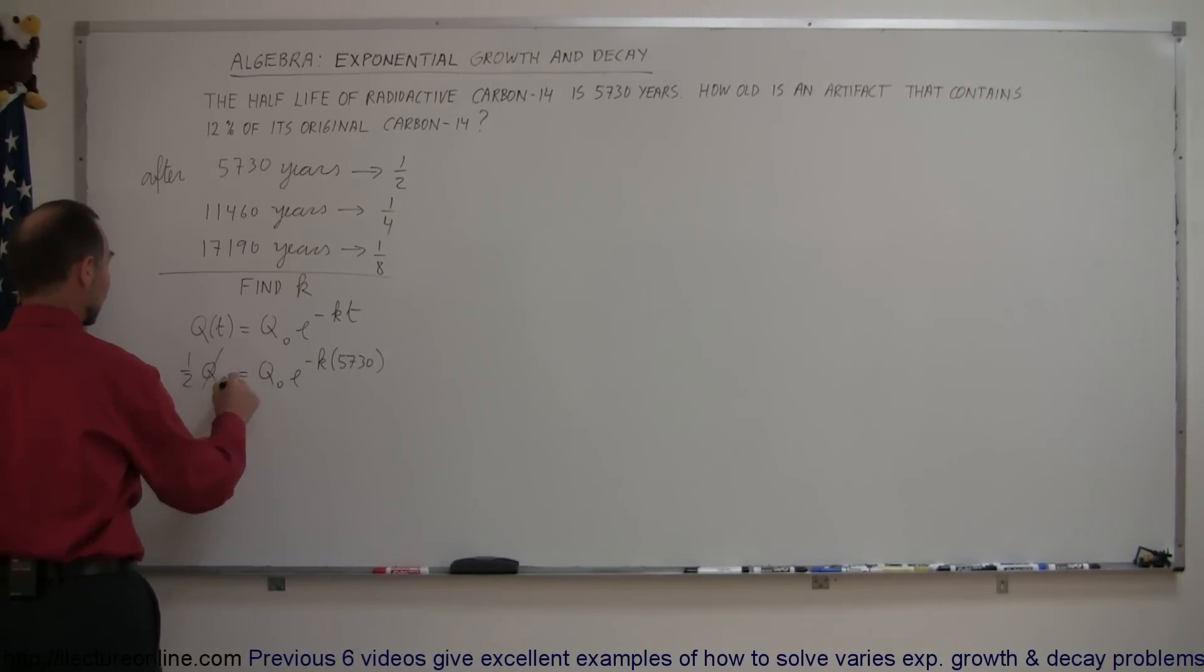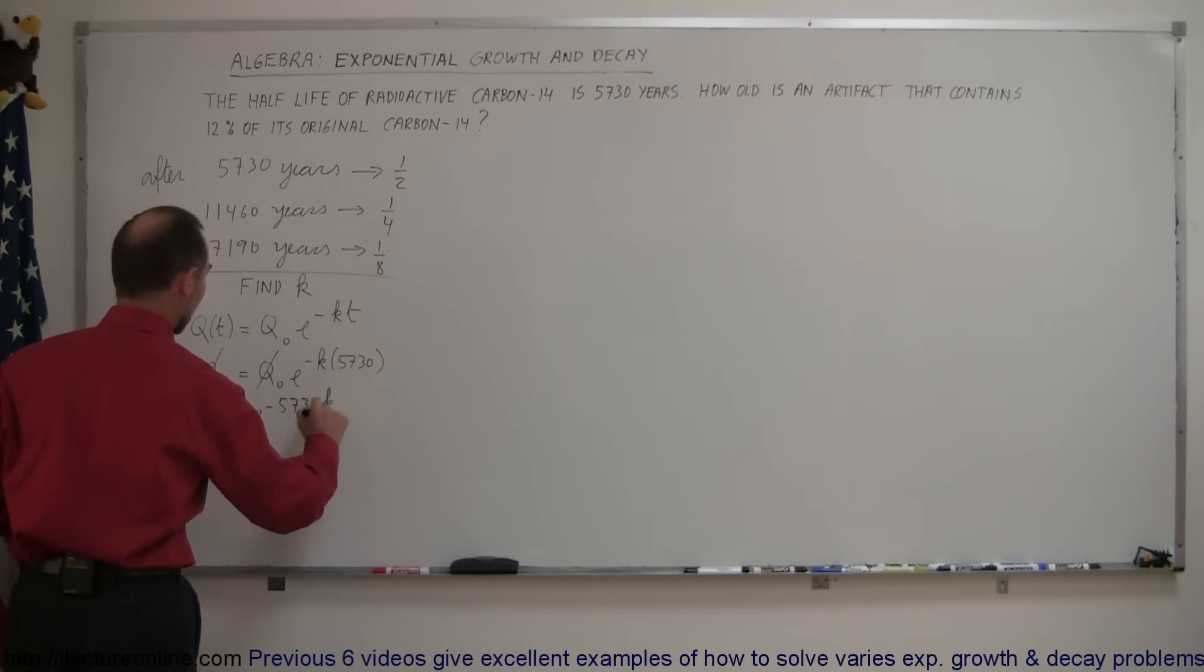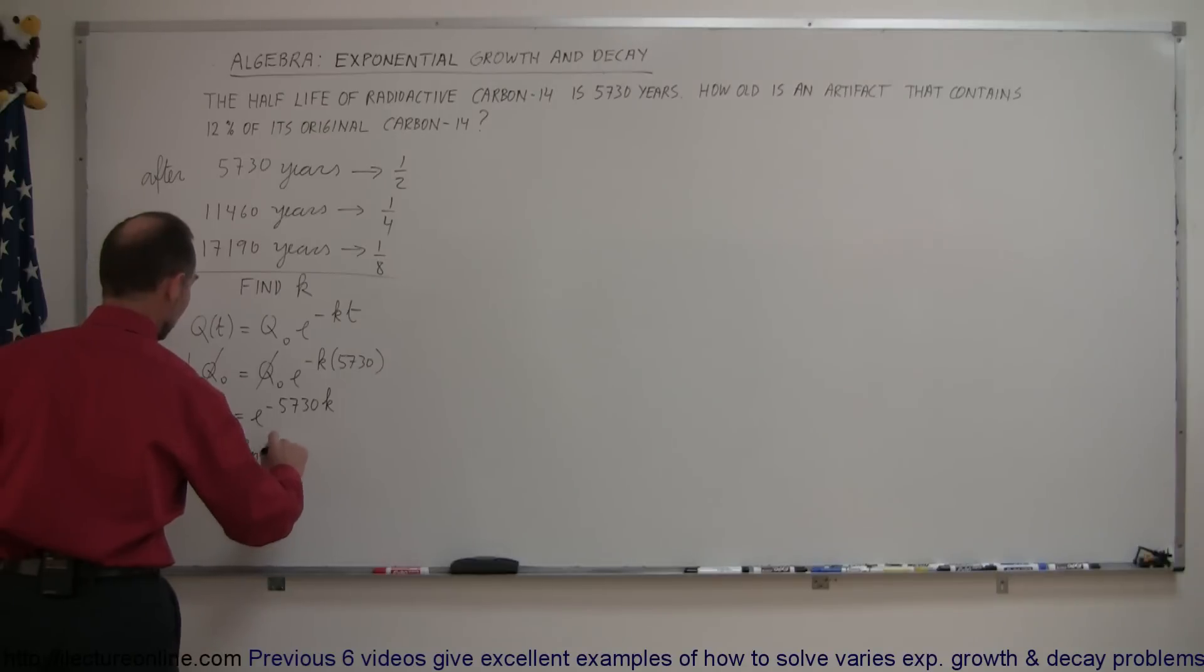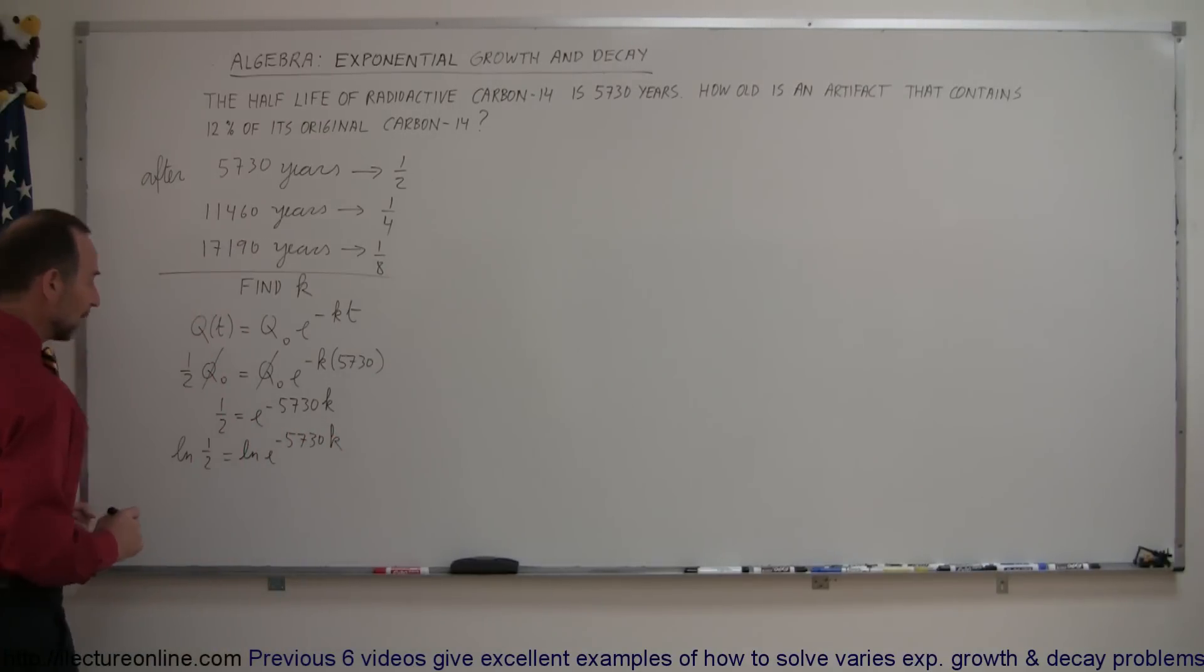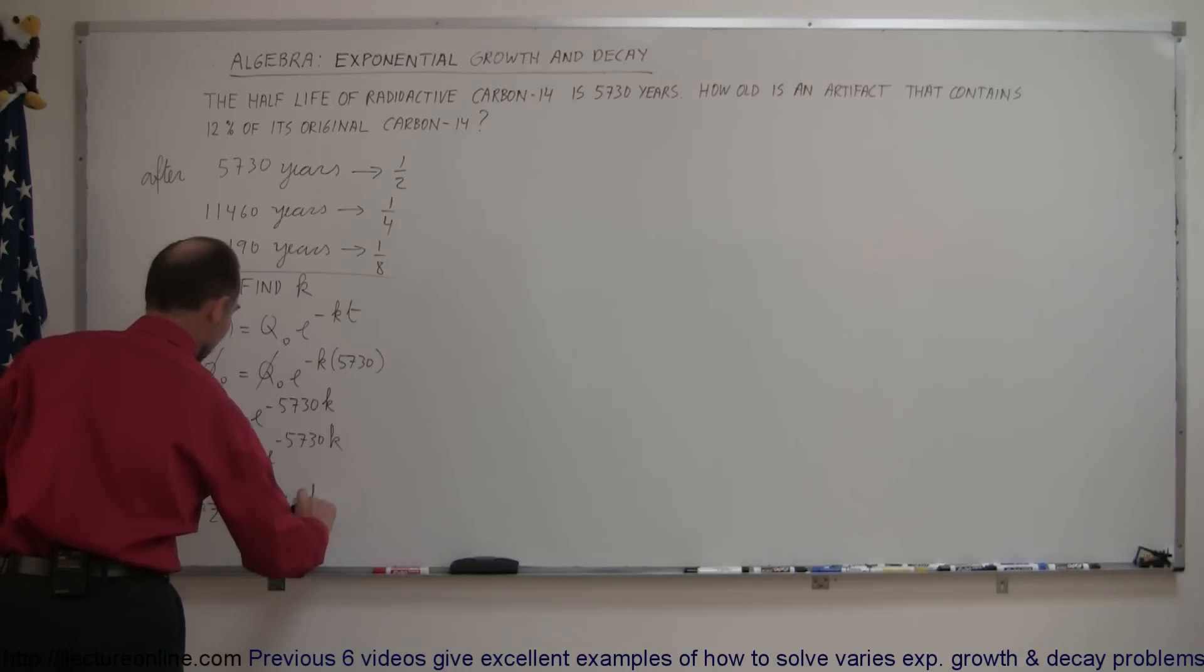So, right away, we can see that q sub not cancels on both sides, so we have one half is equal to e to the minus 5,730 k. We now take the natural log of both sides, so the natural log of one half equals the natural log of e to the minus 5,730 times k. Of course, the natural log negates the exponential, so we now have the natural log of one half equals minus 5,730 k.